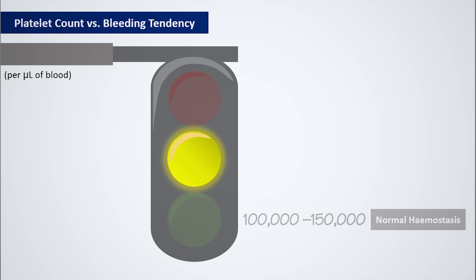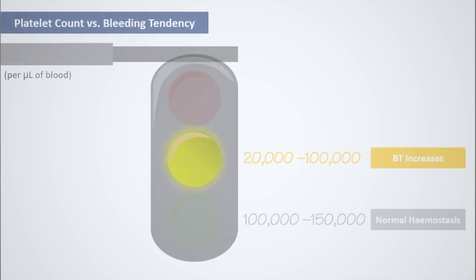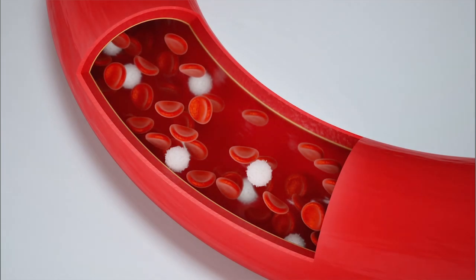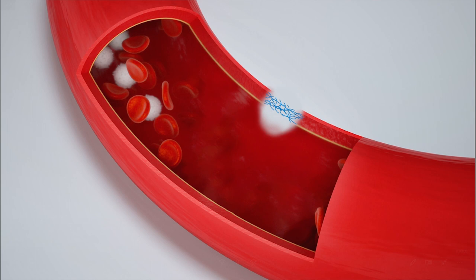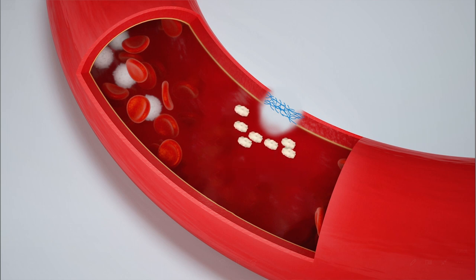The yellow color in our traffic light is the range between 20,000 to 100,000. Imagine this as an alarming phase, since this is where the bleeding time increases. The bleeding time is the time required for platelet adhesion and aggregation to form a platelet plug on the wounded area of the blood vessel.